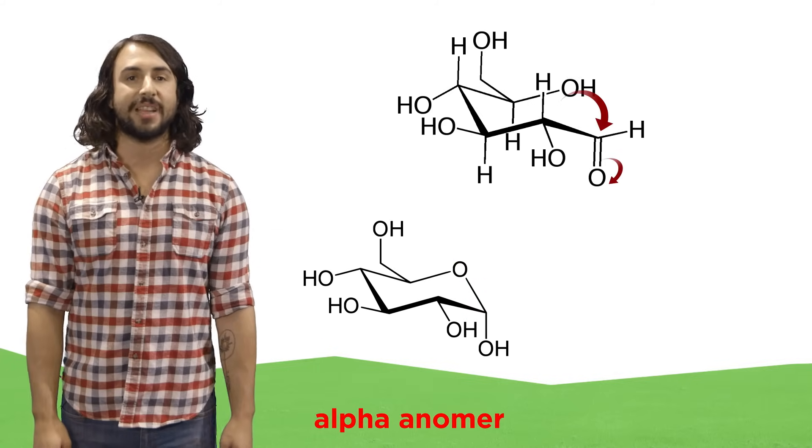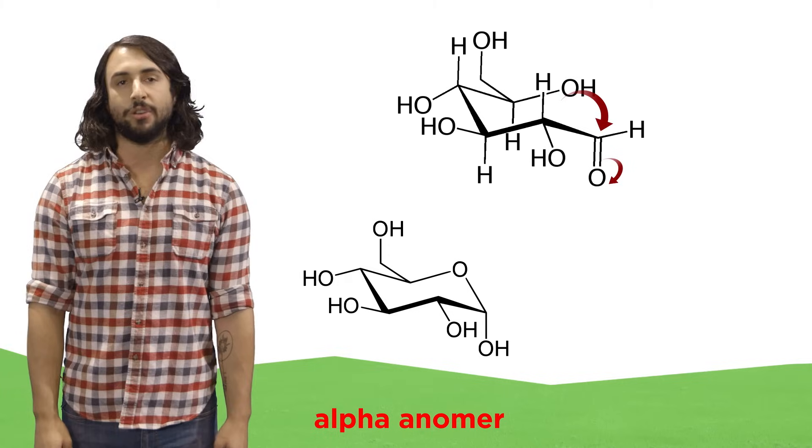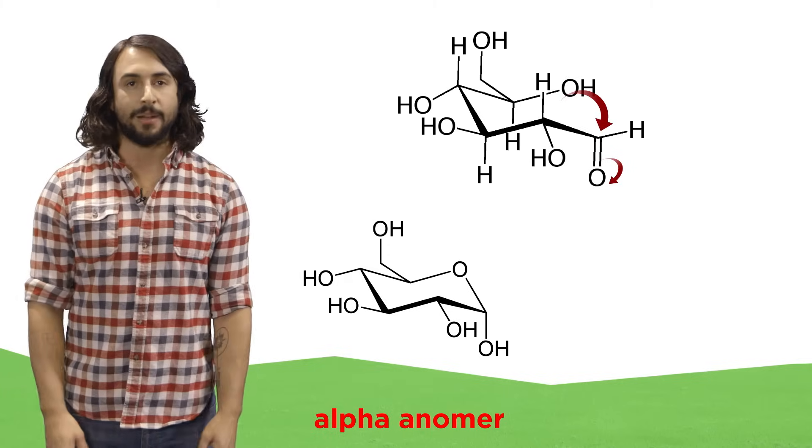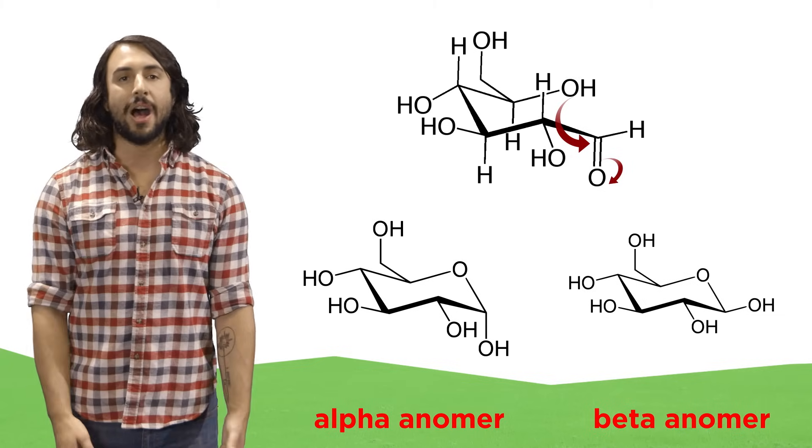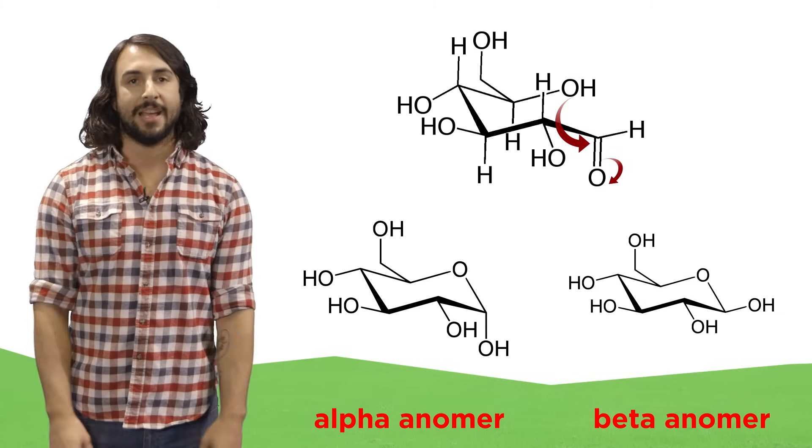It can either attack from this side, pushing the new hydroxyl down, resulting in the alpha anomer, or it can attack from this side, pushing the new hydroxyl up, resulting in the beta anomer.